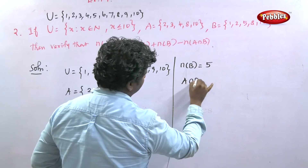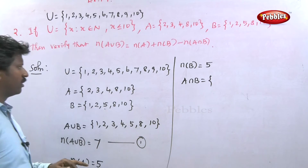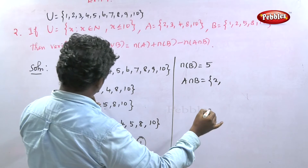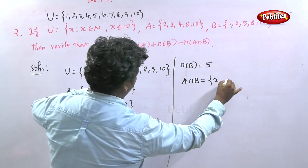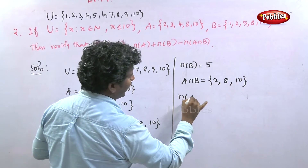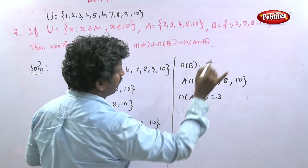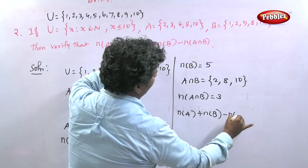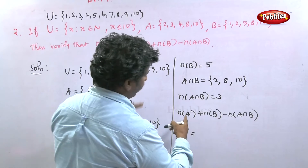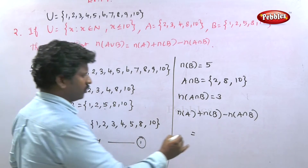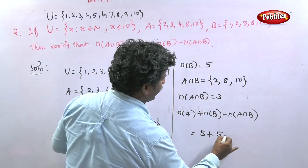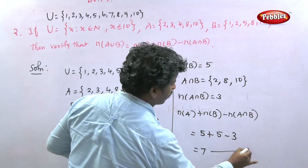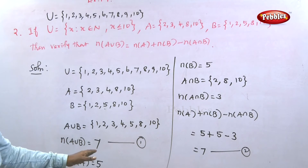Finding A intersection B — the common values of A and B: 2 is common, 8 is common, 10 is common. So A intersection B equals {2, 8, 10}, and n of A intersection B equals 3. Substituting into the formula: n of A plus n of B minus n of A intersection B equals 5 plus 5 minus 3 equals 7. This is equation two.